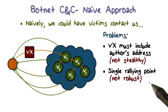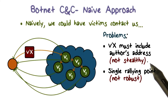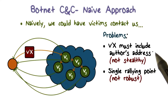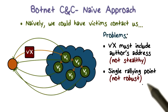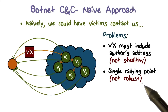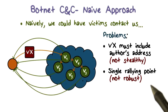The second problem is that this is not robust at all, because there's only one single server for command and control — the one that's hard-coded in the malware. For example, if we have hard-coded our email address in the malware, and that email account has been banned, then there's no command and control available for victims anymore. So this is not robust.